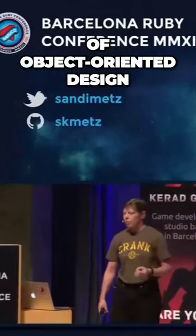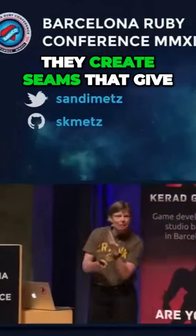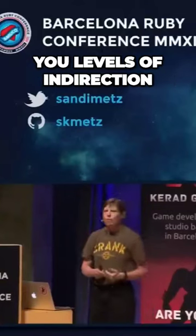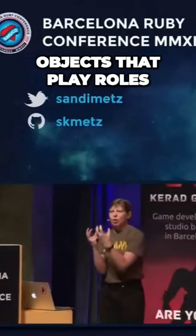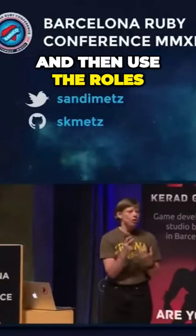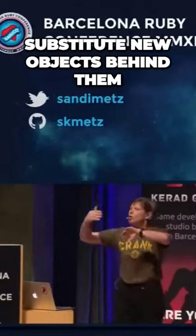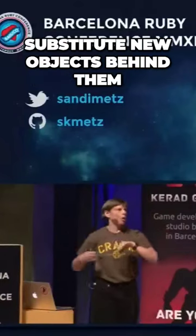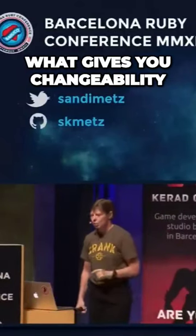Messages are at the core of object-oriented design. They create seams that give you levels of indirection, and they let you define objects that play roles, and then use the roles as shields so that you can substitute new objects behind them. Messages are what gives you changeability.